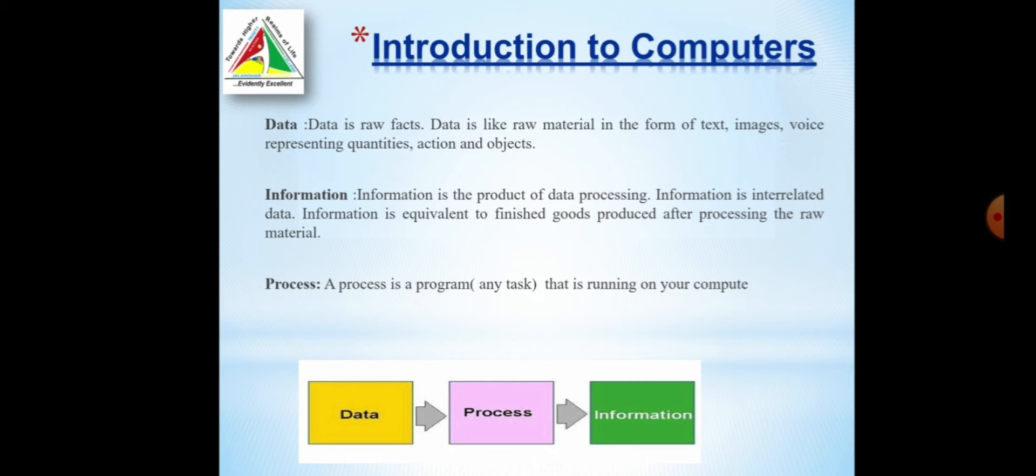Then comes the information. Information is the processed data. After processing the data, we get a meaningful result that is called information. In between this data and information, the process is there. Process means the actual working, the mechanism going on in computers.